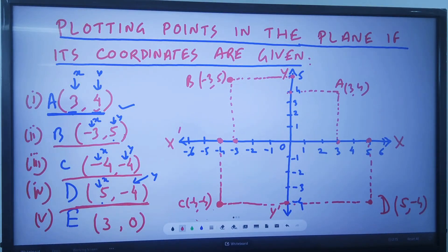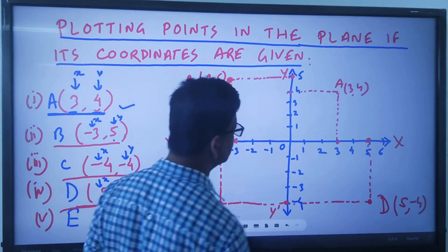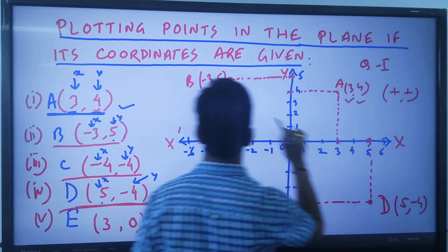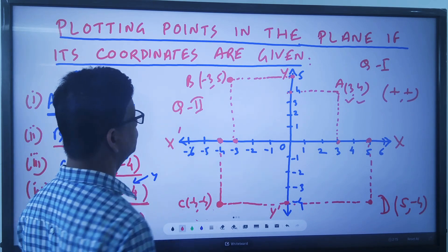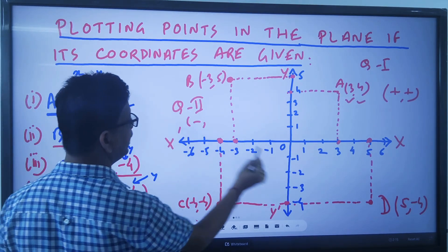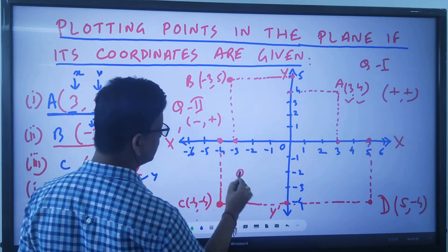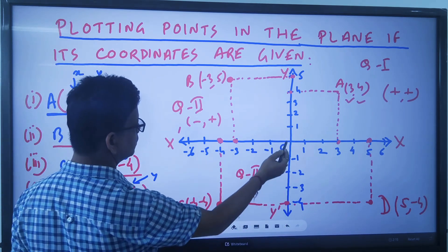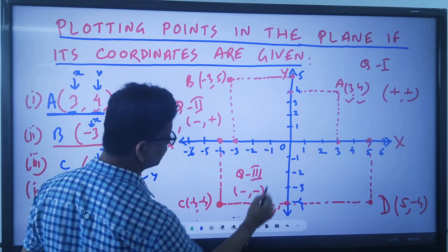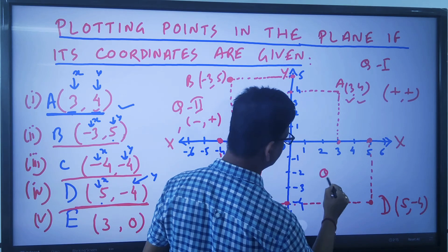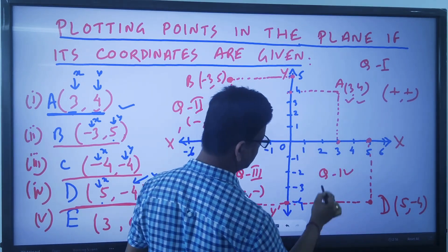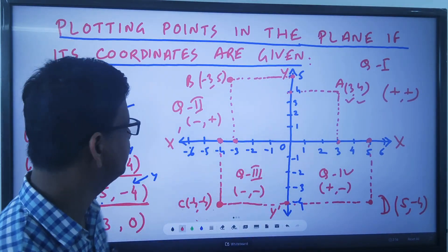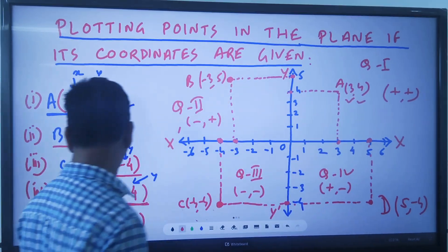This is how the plotting must be done in the quadrants. Quadrant 1 is where both numbers are positive, so plus-plus. Quadrant 2 is where x is minus and y is plus. Quadrant 3 is where x is minus and y is also minus. And finally, quadrant 4 is where x is plus and y is minus, so plus-minus. Be careful about the signs taken by the points in each quadrant.